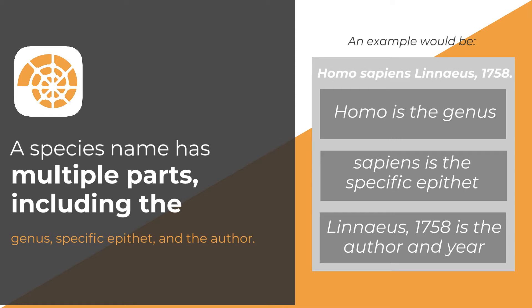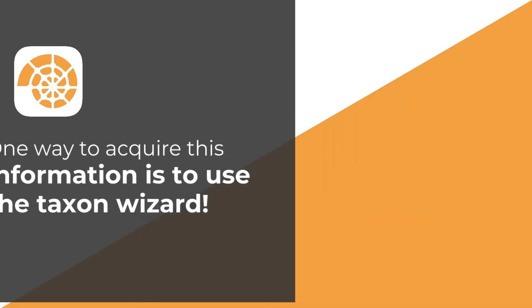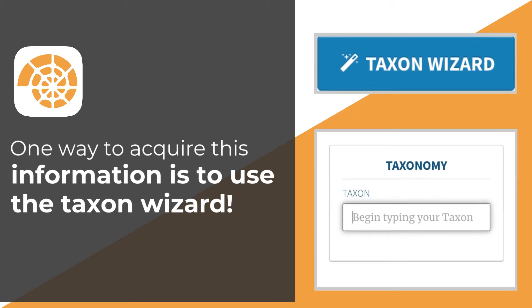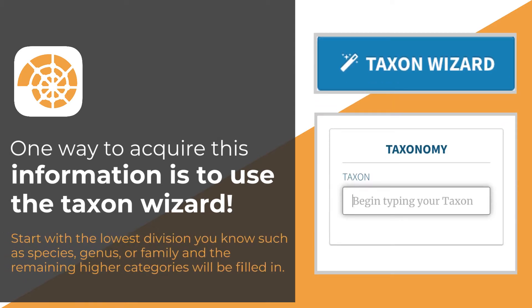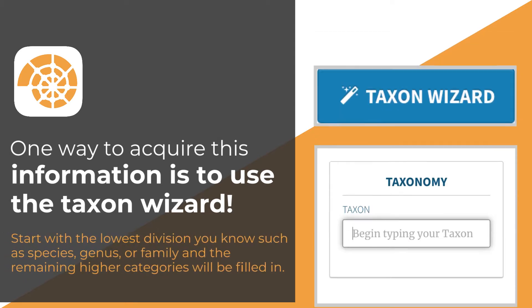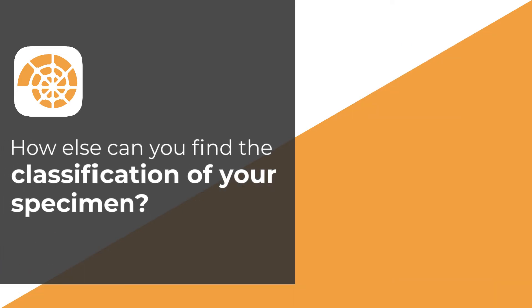One way to acquire this information is to use the taxon wizard. Start with the lowest division you know, such as species, genus, or family, and the remaining higher categories will be filled in automatically.